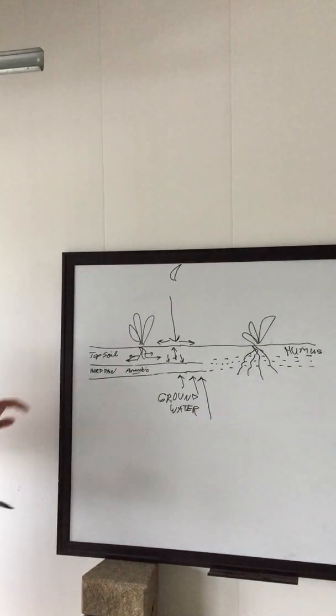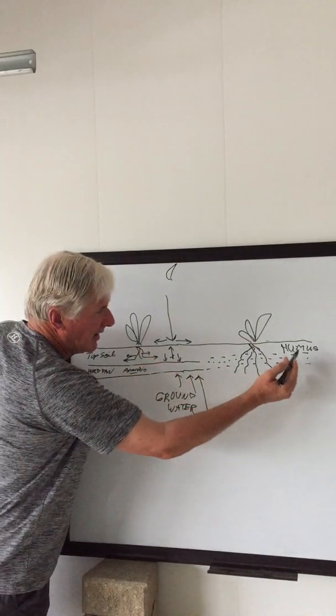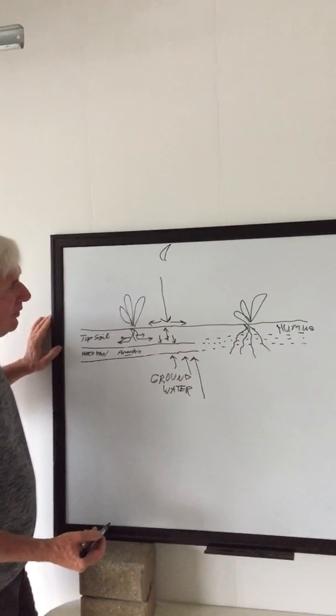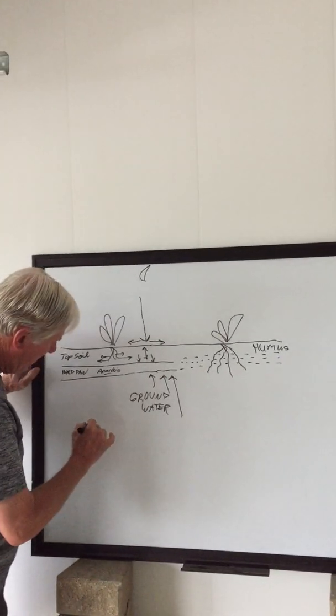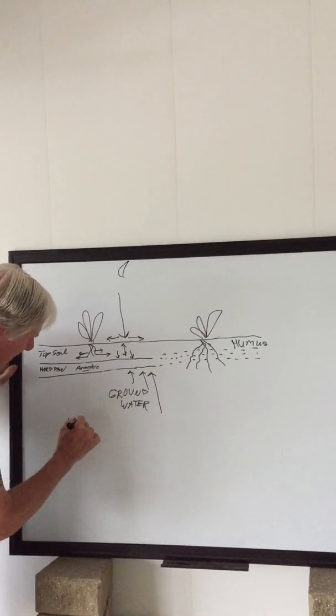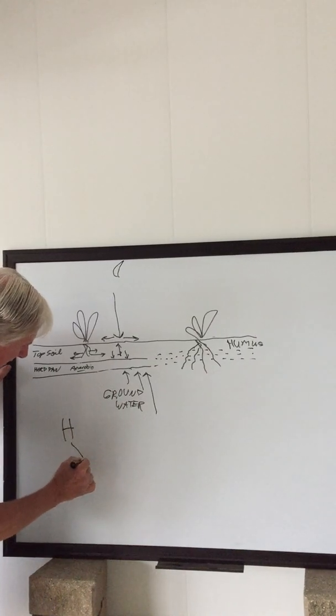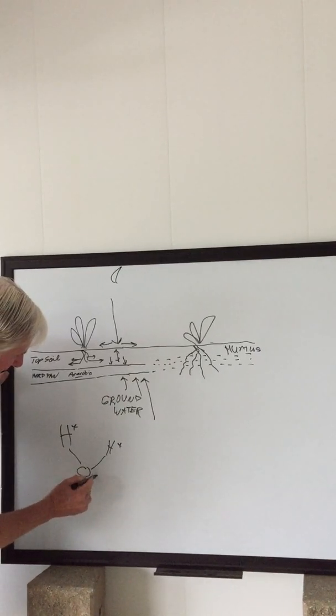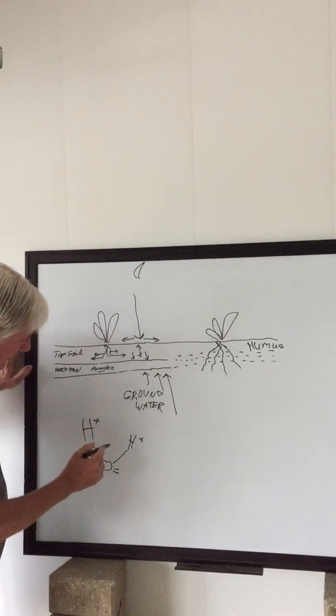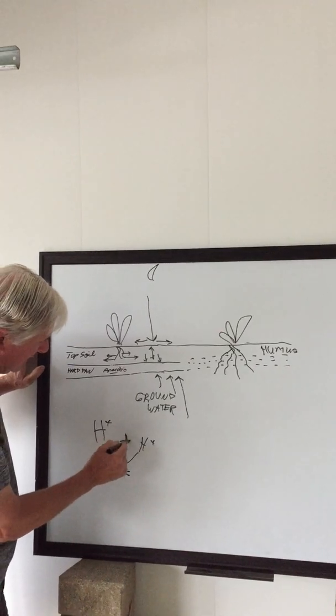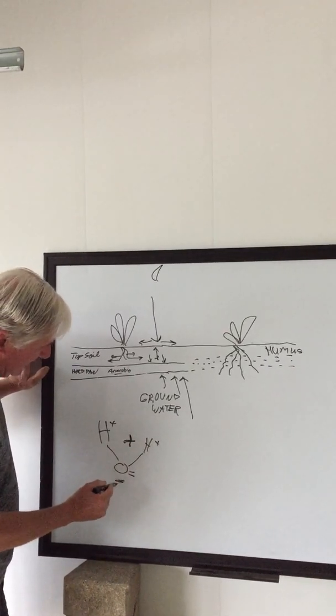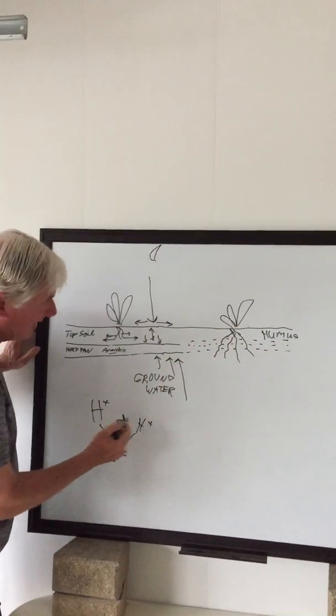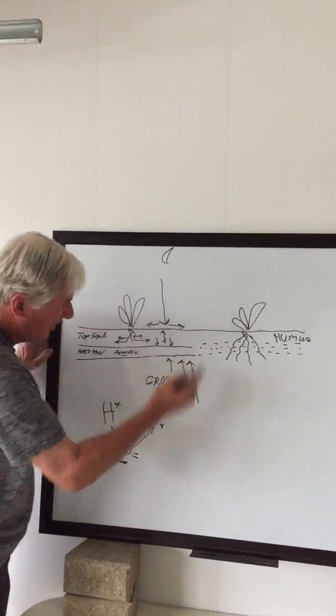The other thing that happens is this humus layer is charged in such a way that it can attract and hold water. Water is a dipolar molecule. There's two hydrogen atoms and there's an oxygen atom. And the hydrogens are positively charged. The oxygen atom is negatively charged. So this dipolar molecule ends up being net positive on this side and net negative on this side. So if you've got negative charges in your humus layer, they can attract this positive and hold the water.